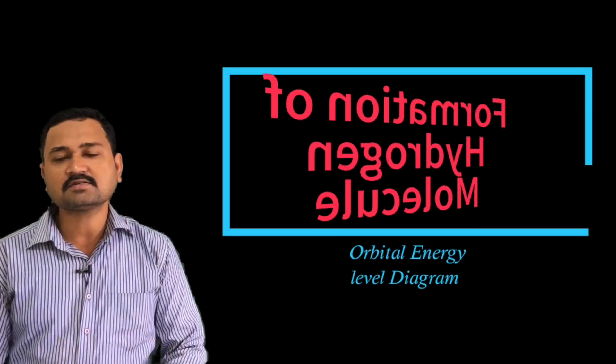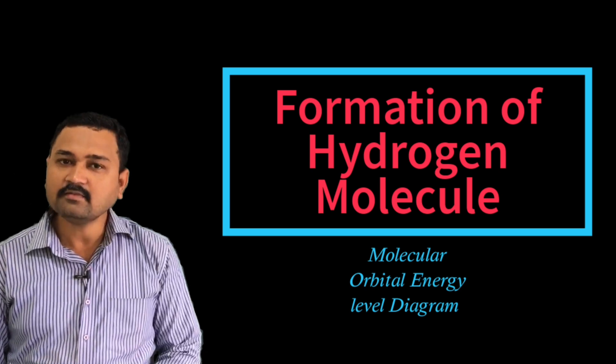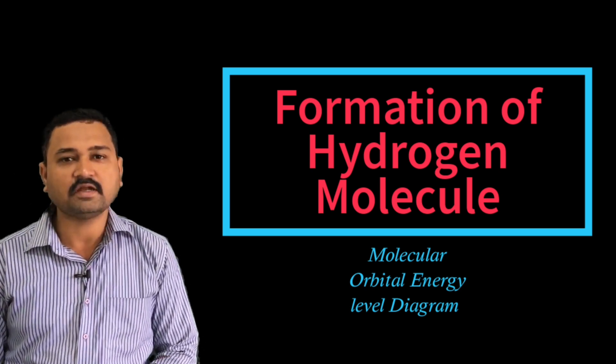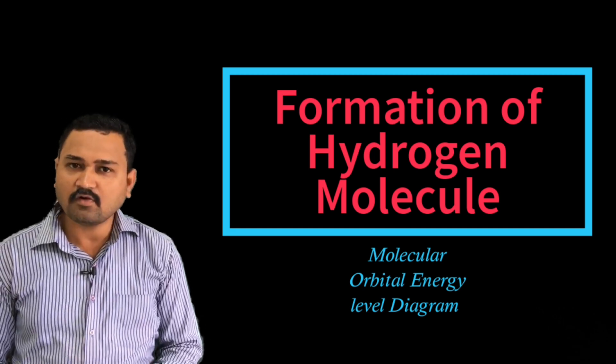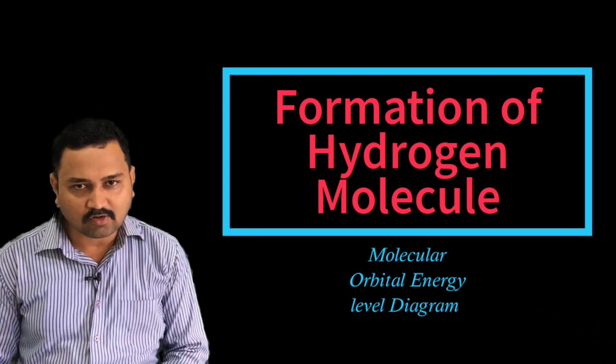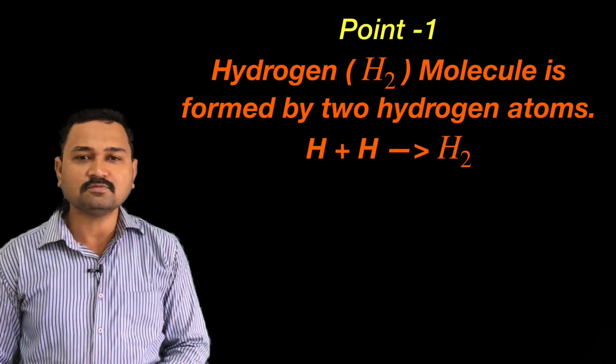This video will be very useful, kindly watch till the end. This point will be very easy. I will give you a very simple trick at the end of this video. Now let us consider the formation of the molecular orbital energy level diagram for hydrogen molecule, that is H2 molecule. When we have to explain the formation of any molecule by using molecular orbital theory concept, always take the reference of that molecule. Here we are explaining the formation of the hydrogen molecule.